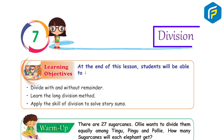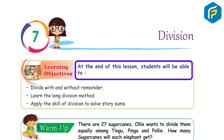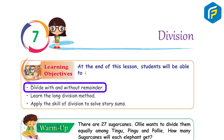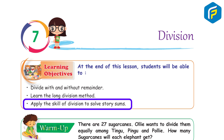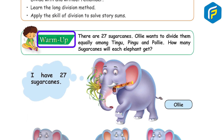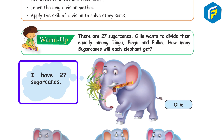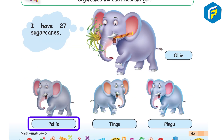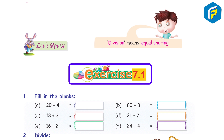Chapter 7: Division. Learning objectives: at the end of this lesson, students will be able to divide with and without remainder, learn the long division method, and apply the skill of division to solve story sums. Warm-up: there are 27 sugar canes. Olly wants to divide them equally among Tingoo, Pingu, and Polly. How many sugar canes will each elephant get? Let's revise — division means equal sharing.